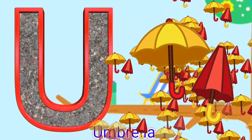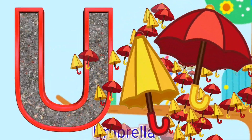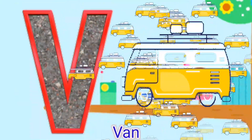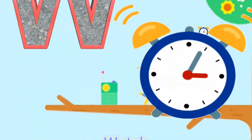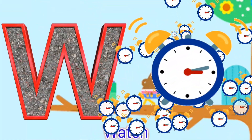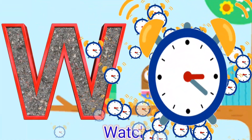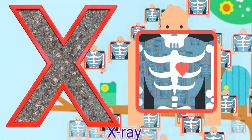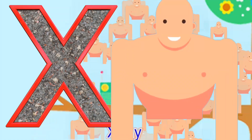U for umbrella, B for band, W for watch, X for X3.